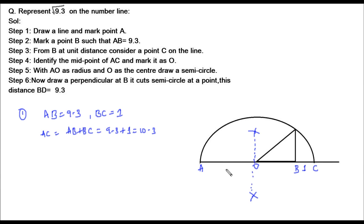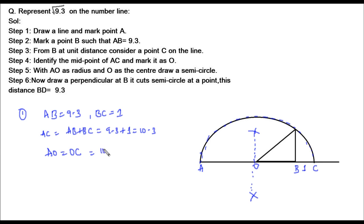So AO is the midpoint of line segment AC. With O as the center and AO as the radius, we draw a semicircle. This means AO equals OC, which equals 10.3 divided by 2, since O is the center of AC.